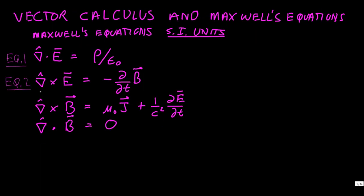Equation 2 specifies the curl of the electric field, equal to the negative of the time derivative of the magnetic field. Then there's a similar pair of equations for the magnetic field. The curl of B is equal to the current density with a constant in front, plus the time derivative of the electric field divided by the speed of light squared.